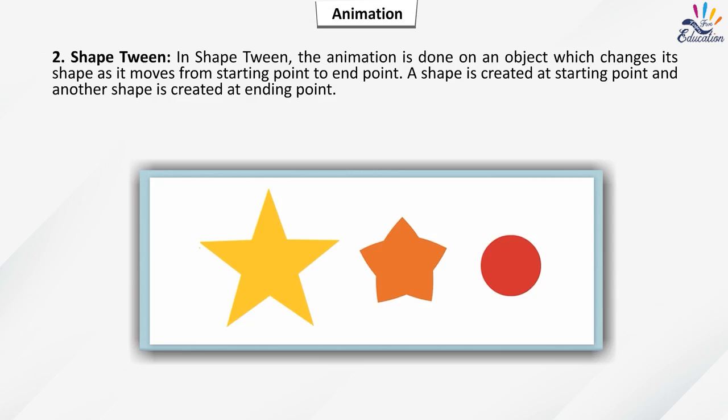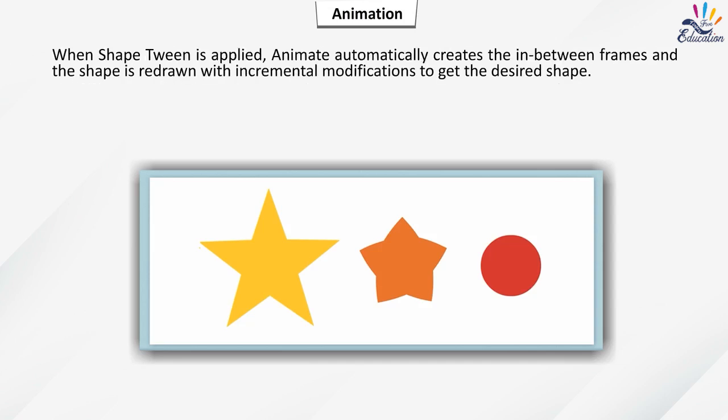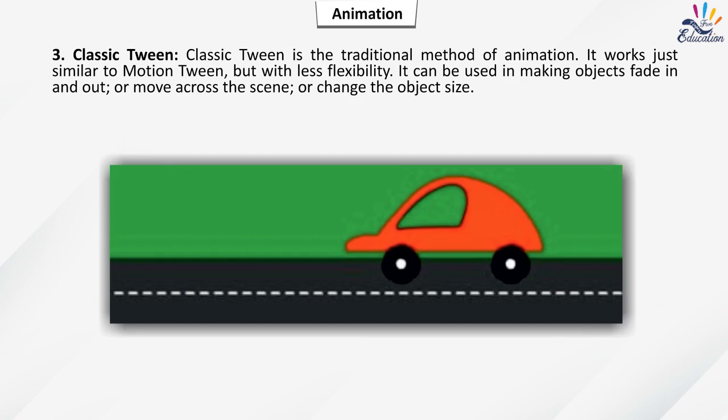Shape Tween: animation is applied to an object that changes its shape as it moves from start to end point. A shape is created at the starting point and another at the ending point. When shape tween is applied, Animate automatically creates the in-between frames and redraws the shape with incremental modifications to achieve the desired shape.